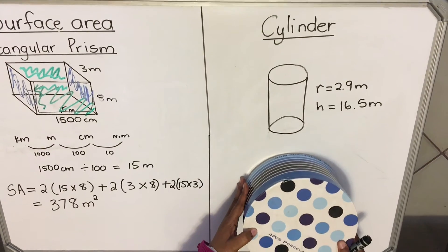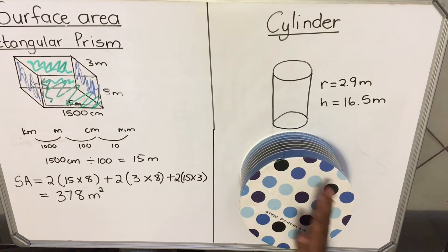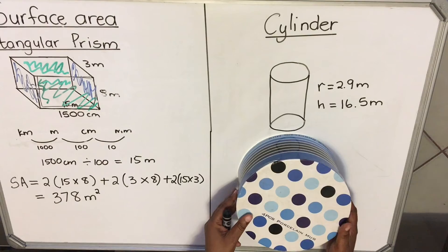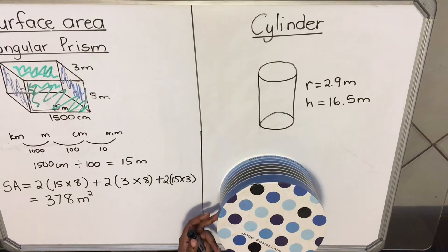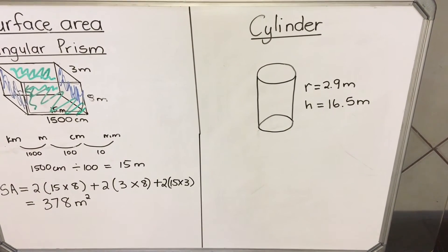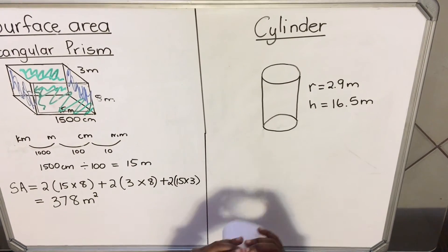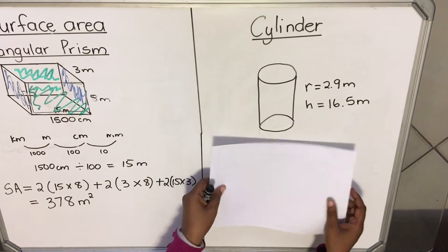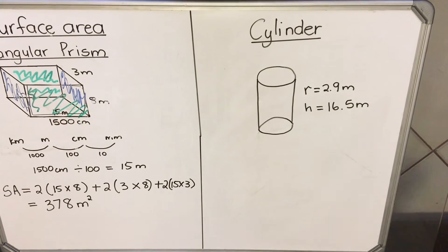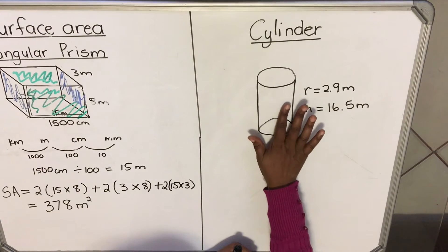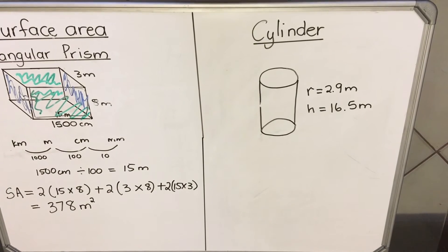Now let's do the cylinder. A cylinder is something like a can — you have a round circular top and a circular bottom, and they are the same. The outside curved part is actually a rectangle. If you cut it open, it unfolds into a rectangle. So for the surface area of a cylinder, you have two circles — the top and bottom — plus the rectangle formed when you open the curved surface.